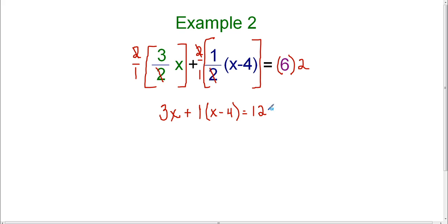So we are left with 3x plus 1 times the quantity x minus 4 equals 12. So this can be simplified to 3x plus x minus 4 equals 12, because 1 times x minus 4 is x minus 4. Now notice that in that one step we've been able to eliminate the fractions and we've been able to write an equation that we can solve. Now we know that we have to combine like terms because I have 3x plus x, which I know is 4x. So now I have 4x minus 4 equals 12.